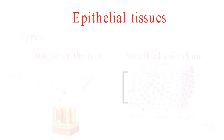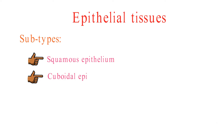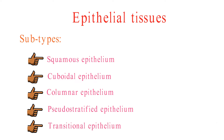There are also several subtypes of epithelial tissue, each with its own unique characteristics and functions. Some of the most common subtypes include squamous epithelium, cuboidal epithelium, columnar epithelium, pseudostratified epithelium, and transitional epithelium.